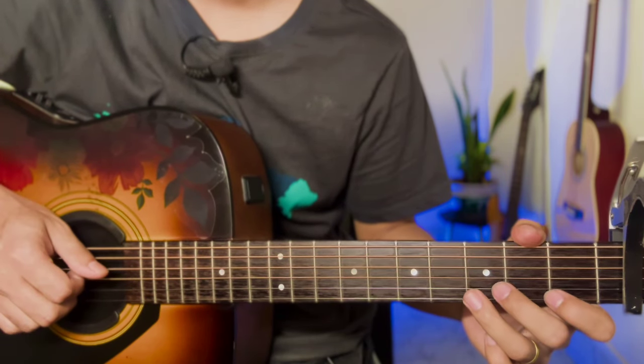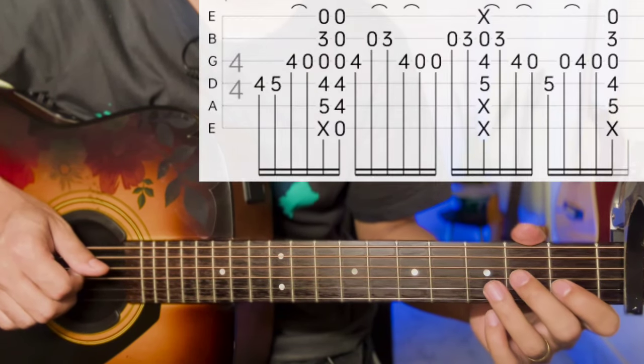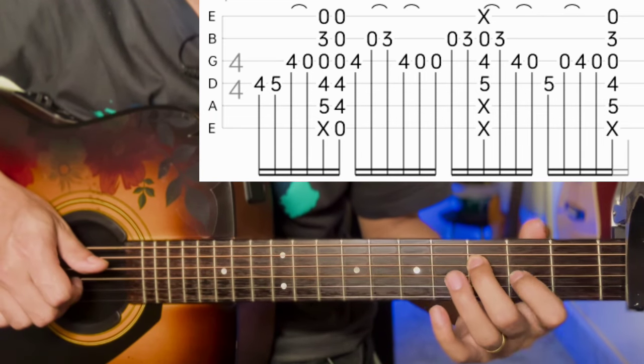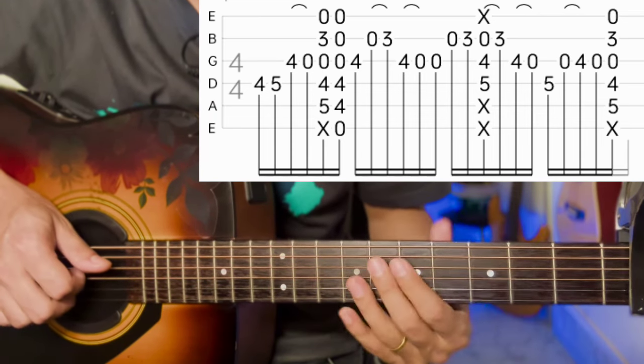Apply the note to the second fret on the fourth string positions 4 and 5. Then apply the fourth string, press and pull off to open.